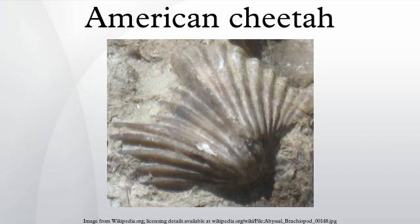Where M. inexpectatus fits in is unclear, although it is probably a more primitive version of M. trumani. M. trumani was the animal morphologically most similar to true cheetahs. Living on the prairies and plains of Western America, it was probably a predator of hoofed plains animals such as the pronghorn. In fact, predation by M. trumani is thought to be the reason why pronghorns evolved to run so swiftly, their 60-mile-per-hour top speed being much more than was needed to outrun extant American predators such as cougars and gray wolves.